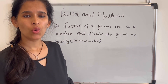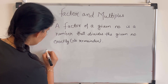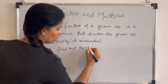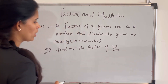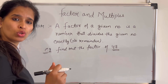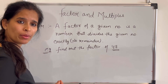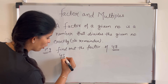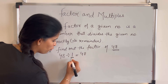Let's understand in normal language — a factor means a number which divides that number completely. For example, let's find out the factors of 48. We have to find those numbers which divide 48 completely with no remainder. We'll check: 1 divides 48 completely, so 1 is a factor of 48.